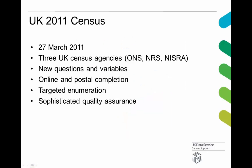For the 2011 census, that took place on the 27th of March 2011. The UK census is actually conducted by three different agencies: for England and Wales that was the Office for National Statistics; for Scotland, it's the National Records for Scotland; and for Northern Ireland, that would be NISRA. For each census there are new questions and variables added. What was unique for the 2011 census was that for the first time there was online completion of the census. Targeted enumeration took place because there are always certain areas or types of people harder to find and count. A lot of quality assurance took place on the data as well.